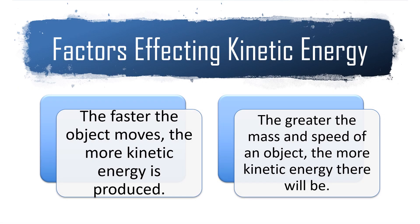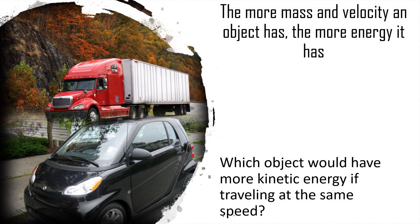Some factors affecting kinetic energy: the faster the object moves, the more kinetic energy is produced. The greater the mass and speed of an object, the more kinetic energy there will be. So if we're looking at a semi-truck and a smart car both traveling at 60 miles per hour, the truck would have more kinetic energy than the smart car — hands down — because it has much more mass.